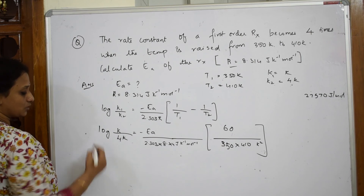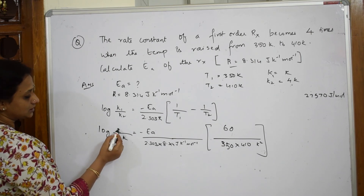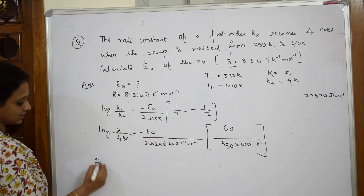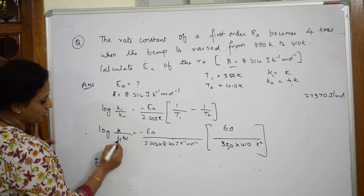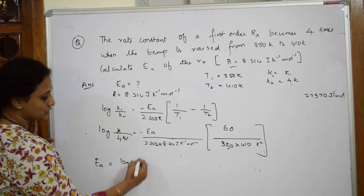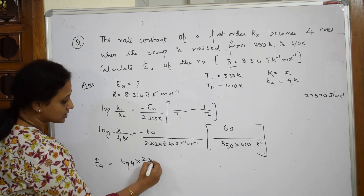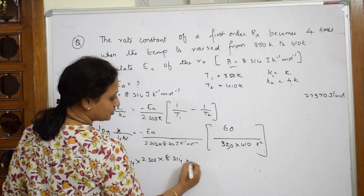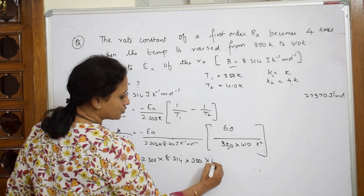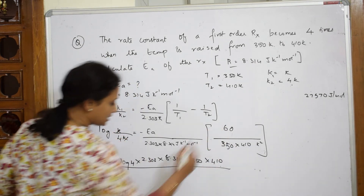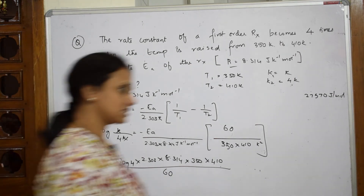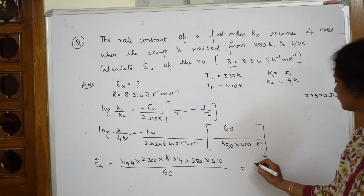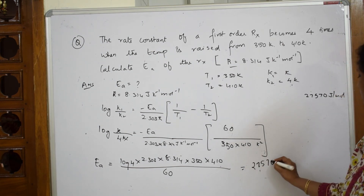Now to solve this: K and K cancel. When Ea comes to one side, Ea is equal to log 4 into 2.303 into 8.314, into 350 into 410, divided by 60. After solving, I get an answer of 27570.